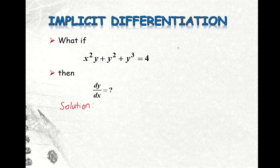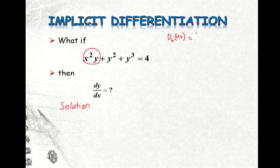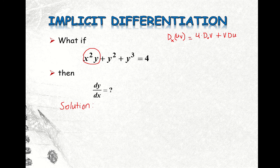As I mentioned last time, if you have this kind of given, so this is a product, so you may use the product rule formula. If you have u and v, the product of u and v, with respect to x, you use this formula. So we have u, the first factor, times the derivative of the second factor. Our second factor is v, so the derivative of v with respect to x. Then plus v times the derivative of u with respect to x.